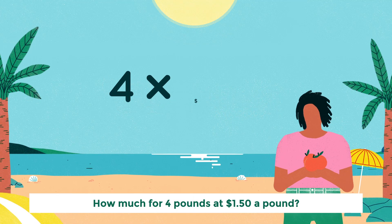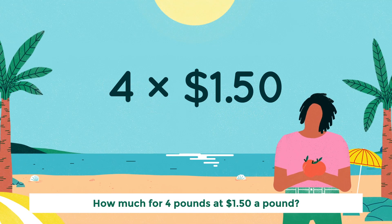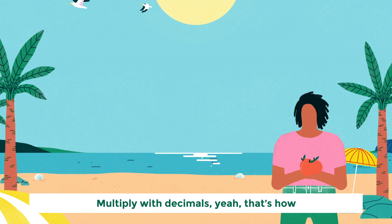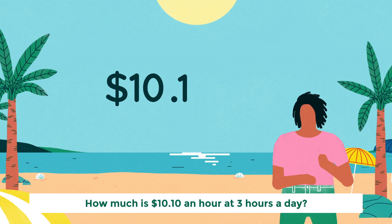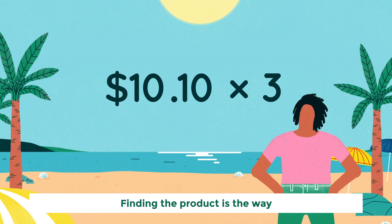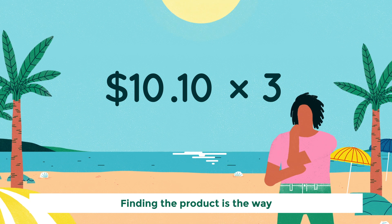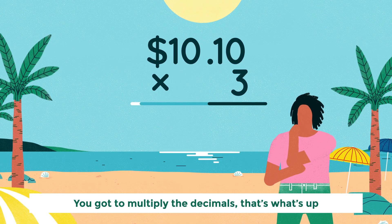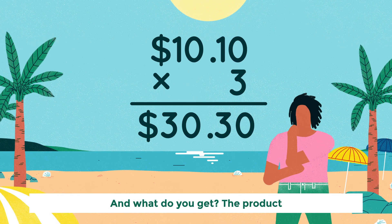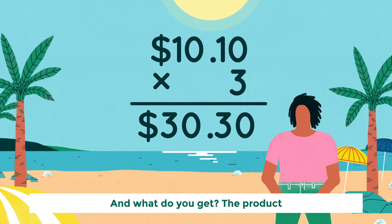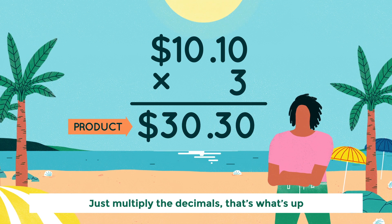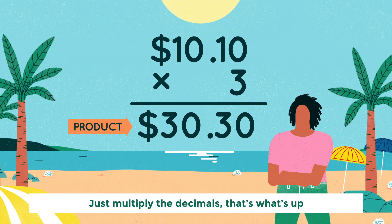How much for four pounds at $1.50 a pound? Multiply with decimals, yeah that's how. How much is $10 an hour at three hours a day? Finding the product is the way. You gotta multiply the decimals, that's what's up.